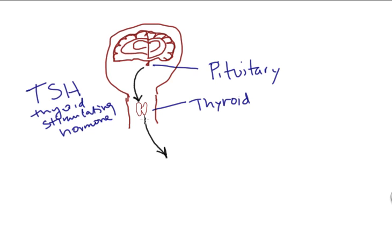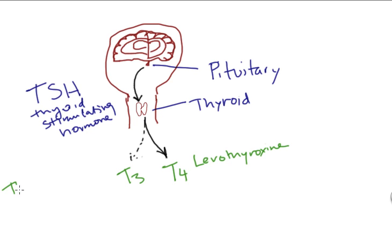Now there are two types of thyroid hormone. The main type is called T4, and then there's another one, T3. These are kind of a pain because T4 is called levothyroxine, and T3 is called triiodothyronine. A lot of people just call it T4 or T3, except if you buy it in the store it's called levothyroxine, or sometimes synthroid.